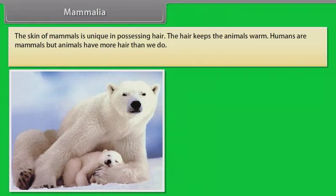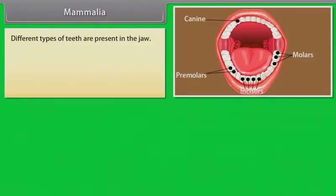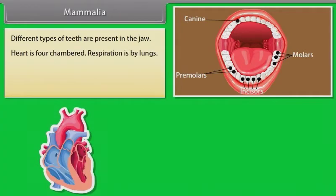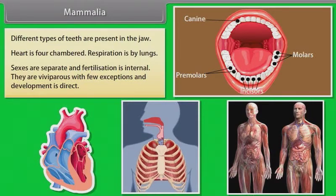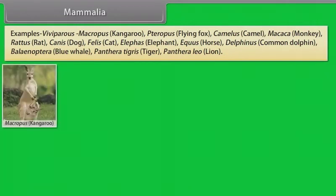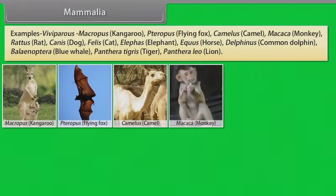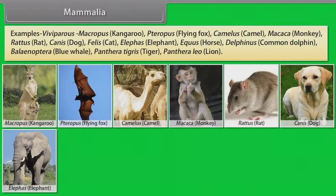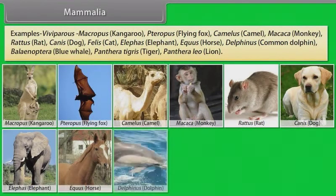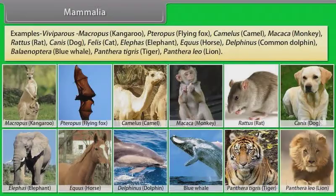Humans are mammals but animals have more hair than we do. External ears or pinnae are present. Different types of teeth are present in the jaw. Heart is four-chambered. Respiration is by lungs. Sexes are separate and fertilization is internal. They are viviparous with few exceptions and development is direct. Examples: Macropus (Kangaroo), Pteropus (Flying Fox), Camelus (Camel), Macaca (Monkey), Rattus (Rat), Canis (Dog), Felis (Cat), Elephas (Elephant), Equus (Horse), Delphinus (Common Dolphin), Balaenoptera (Blue Whale), Panthera tigris (Tiger), Panthera leo (Lion).